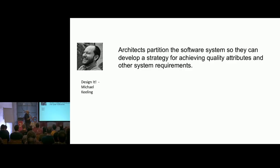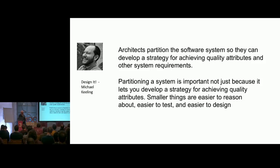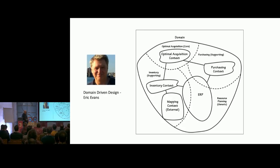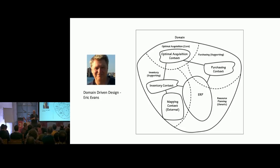One of the ideas in 'Design It' is that you partition the system in order to meet quality attributes — one of the reasons you break things up is because it gives you more flexibility in meeting those quality attribute requirements. How do you partition a system? That's a whole talk in itself. This is the classic domain-driven design approach where you do context mapping as an exercise to figure out all the bounded contexts of your system. A bounded context is a portion of the domain where you have people who speak a common language in the business and use a shared set of terminology.